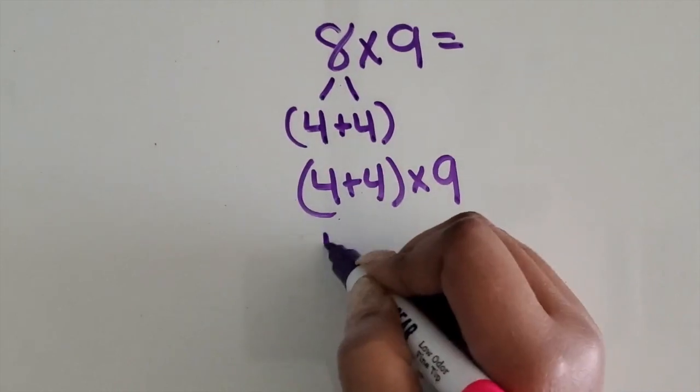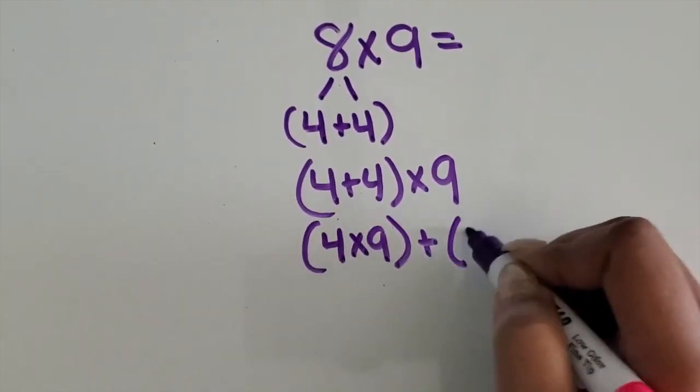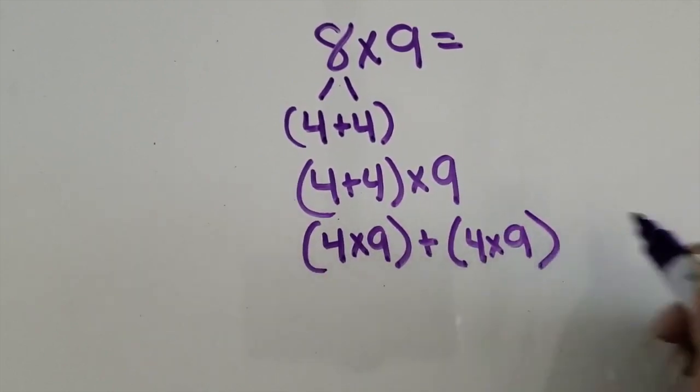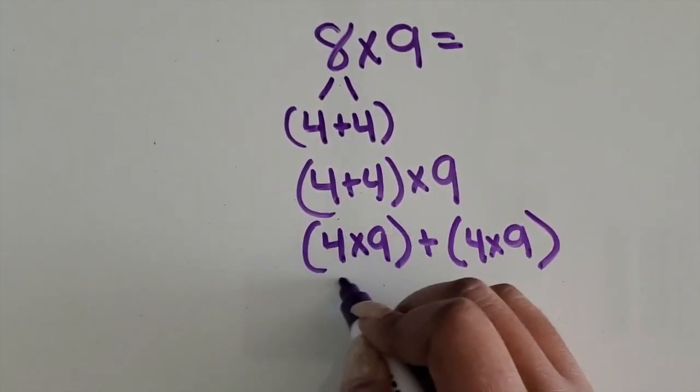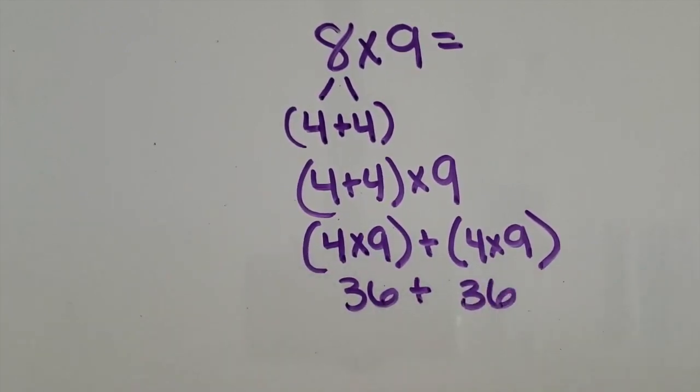So we know 4 times 9 and then 4 times 9 again. 4 times 9 is 36. 4 times 9 is 36. Add them together.